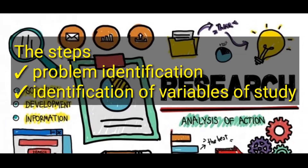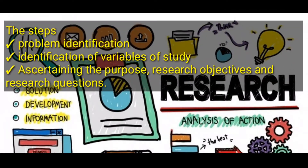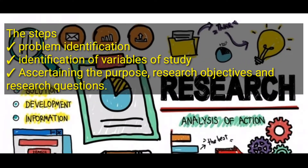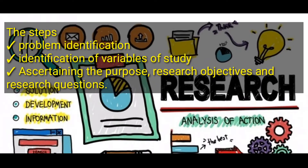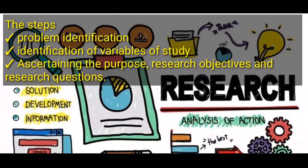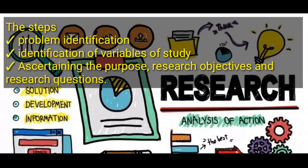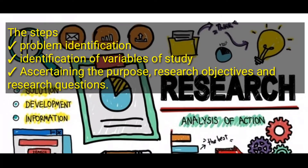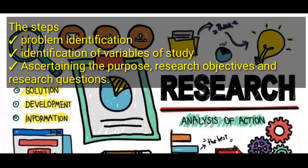After identifying the variables of study, the next step is ascertaining the purpose, research objectives, and research questions. One of the features of research is purposiveness, so a research must have an aim to achieve. You must ascertain the purpose or aim, define the research objectives, and then formulate the research questions.